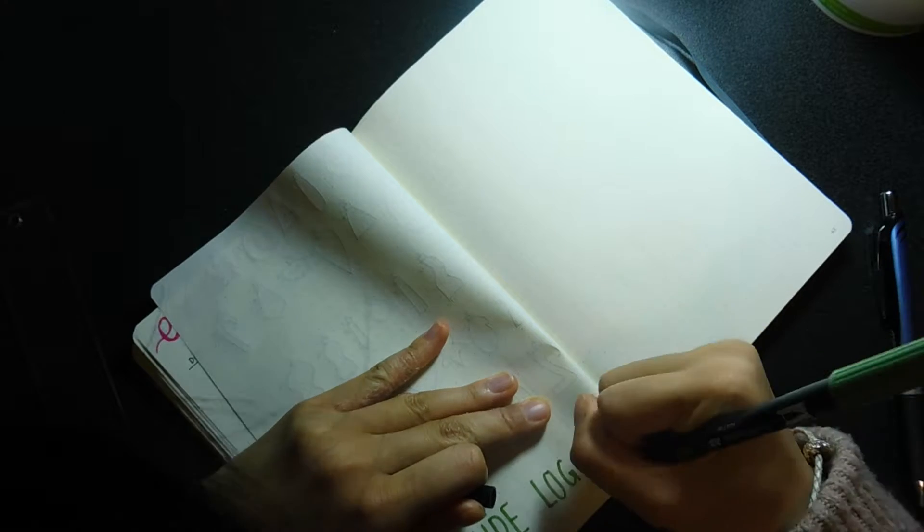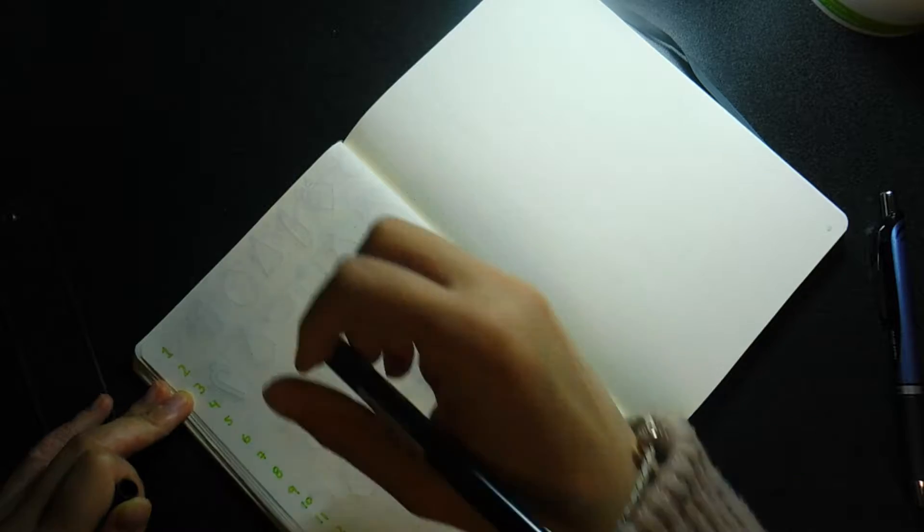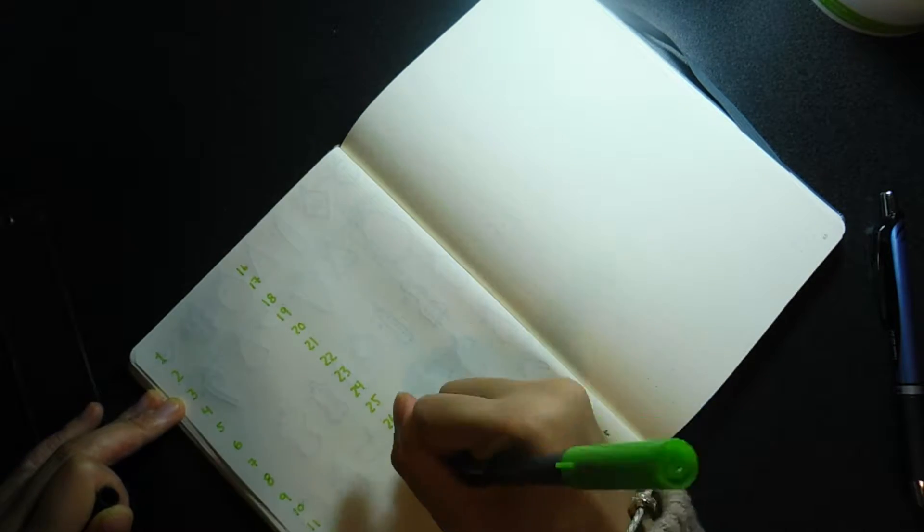Next I move on to my gratitude log, which I find really important to me just because I need to be thankful for everything that I have in my life. I used a Tombow dual brush pen to write in "gratitude log" on the bottom, and then basically just numbered in 1 to 31 so I can write beside it every day something that I am grateful for.